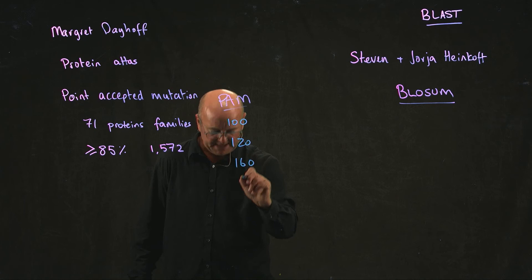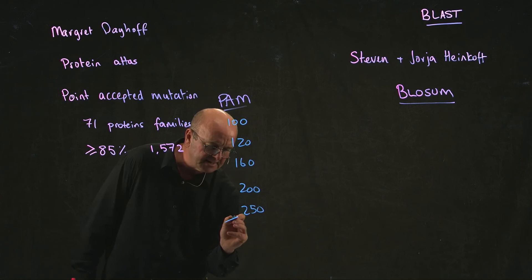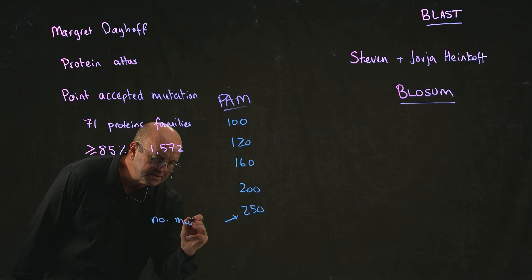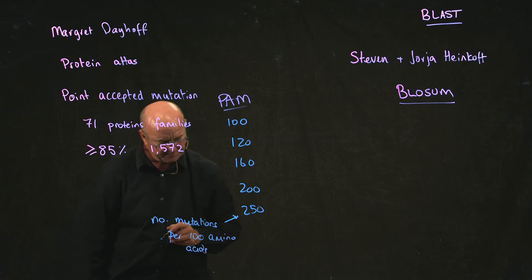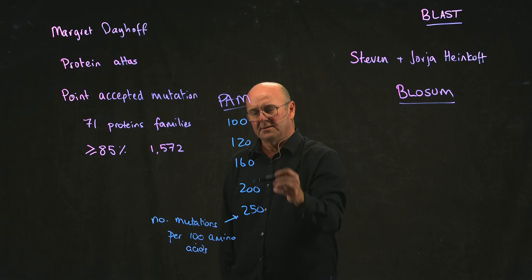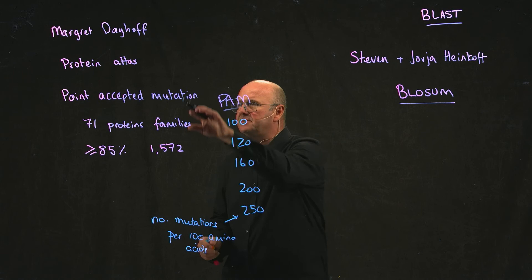So the common versions of Pam are 100, 120, 160, 200, 250. And what this means, this is the number of mutations per 100 amino acids. So this means you have two and a half mutations per amino acid, expected. And it's basically how similar the proteins are that you put into the table to do this calculation to calculate the frequencies.